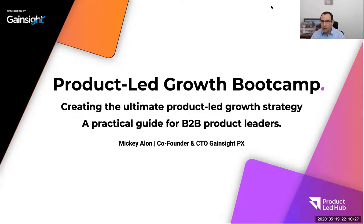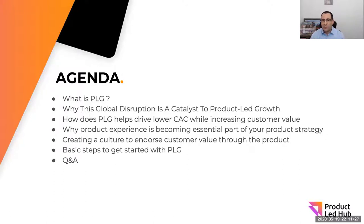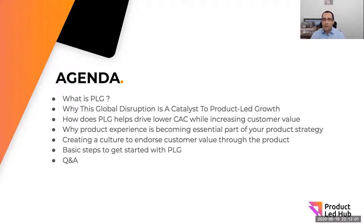In this session, we're going to talk about product-led growth and how to create a strategy. We're going to discuss many elements of how to deal with market volatility and how to amend your product strategy in light of today's challenges. I'll speak about what product-led growth is, why global disruption is a catalyst for it, how it ties to business metrics like customer acquisition costs, how to create a culture around customer value, and five steps to start with product-led growth, even if you are a B2B enterprise. These steps are doable based on our experience at Gainsight.